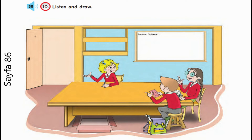Today, we are going to do an experiment. We need two oranges. Where are they? They are next to the magnifier, in the box.